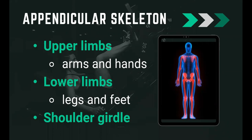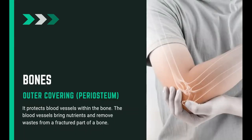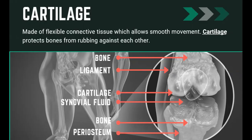The human skeleton is also composed of cartilage and bones. Bones have an outer covering called the periosteum, which protects blood vessels within the bone. These blood vessels bring nutrients and remove waste from fractured parts. Cartilage is made of flexible connective tissue, which allows smooth movement and protects bones from rubbing against each other. A cushioning fluid called synovial fluid also helps. As you grow, some cartilages are replaced by bones.